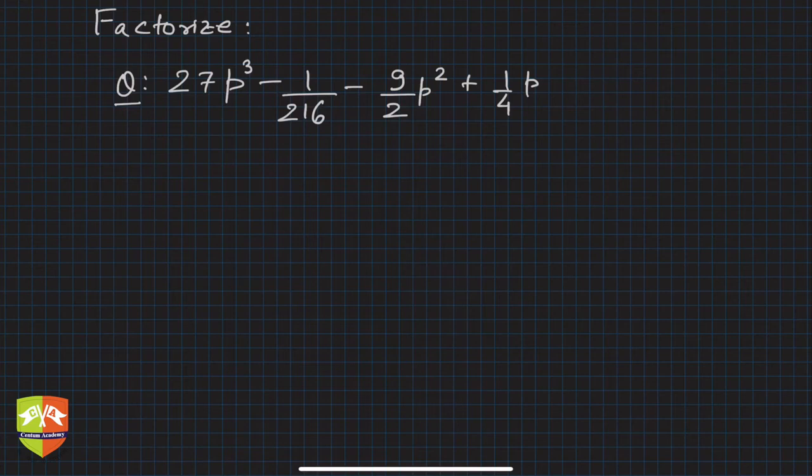Now in the first look, it looks difficult to factorize, but there are few indicators. Those indicators are: first, there are four terms. We learned that if four terms are there, there could be a possibility of a binomial cube, right? And there is a cube term as well, so that is another supporting indicator.